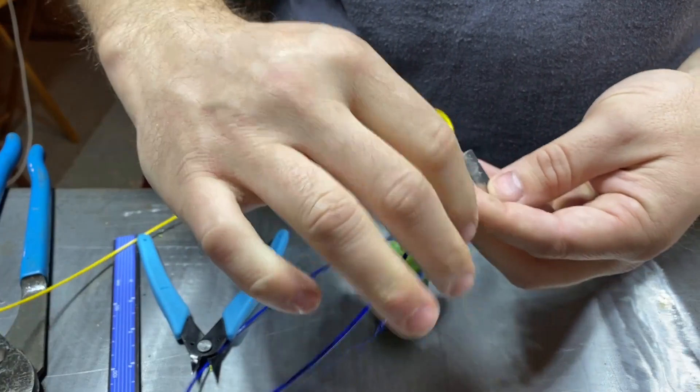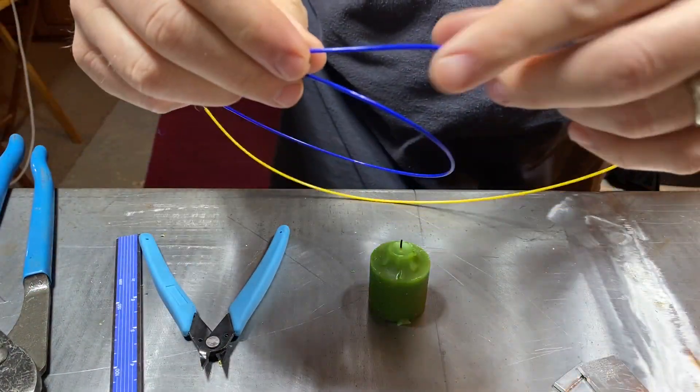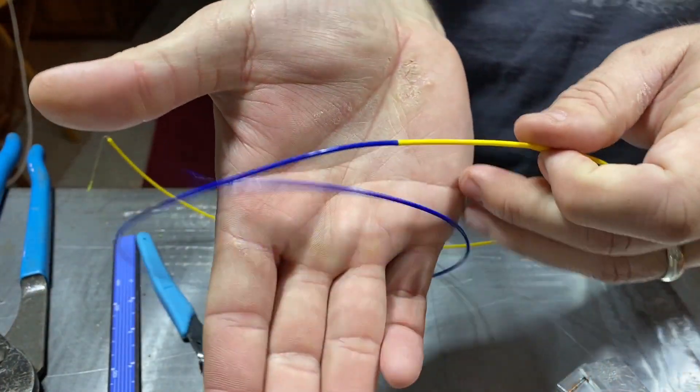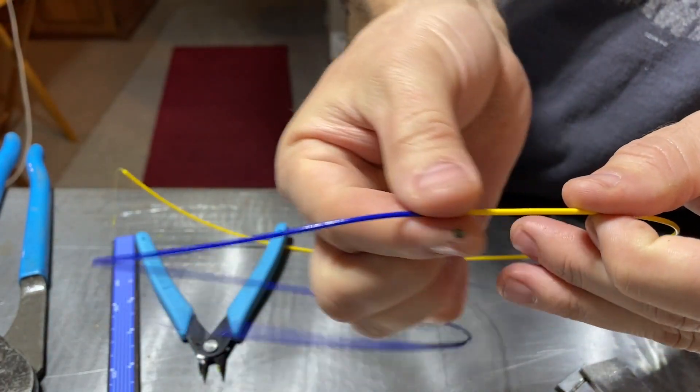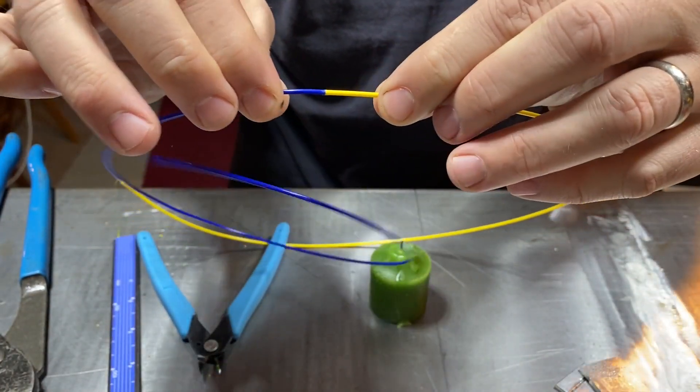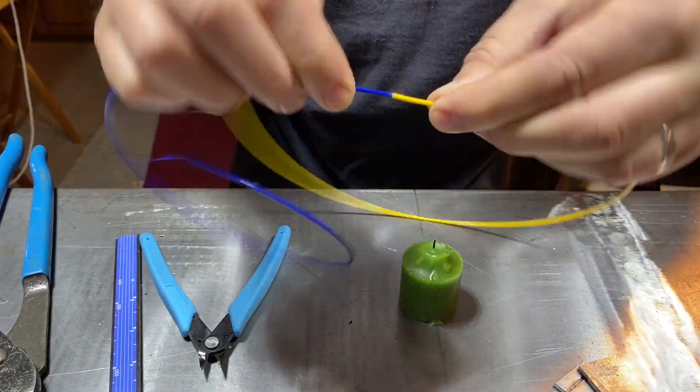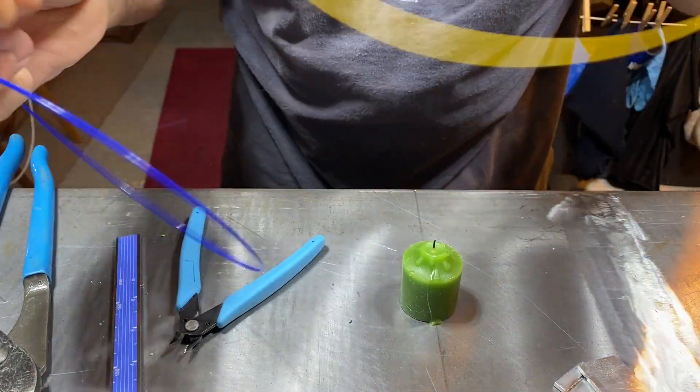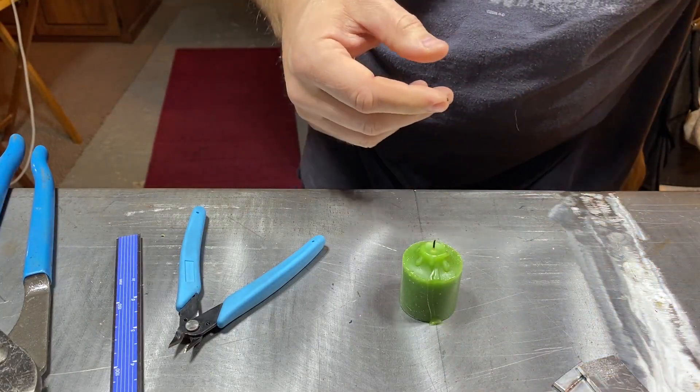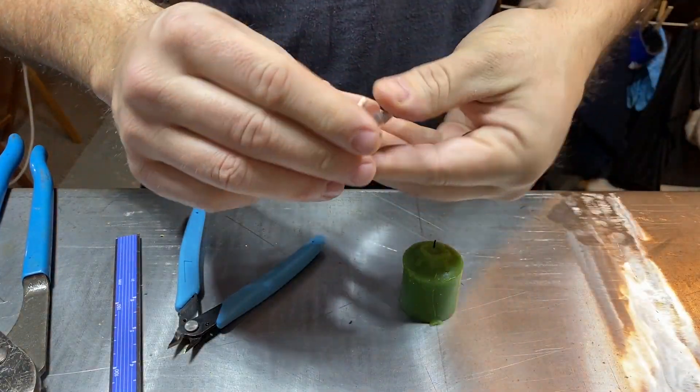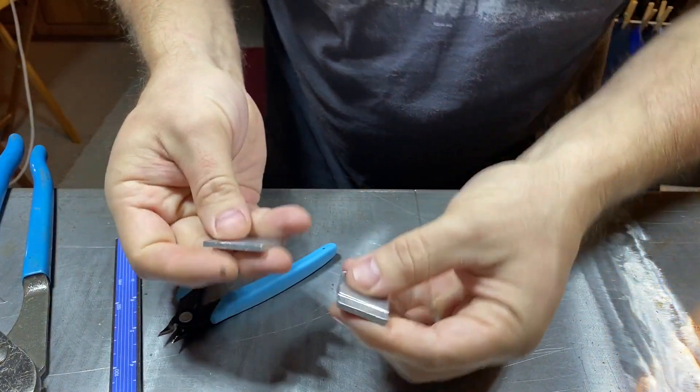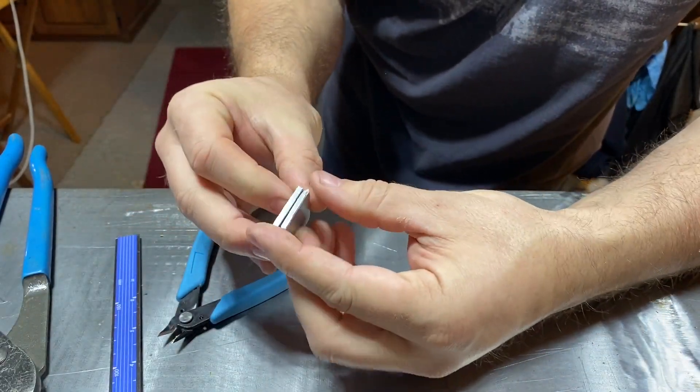But what you end up with without too much work is a really nice splice that will pass through your extruder. It's pretty tough. It's not completely as tough as regular filament. I mean, you can eventually break it, but it's enough to pass through your printer.